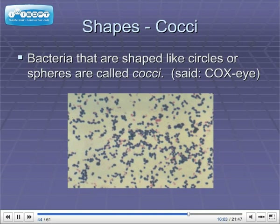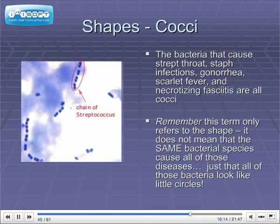Bacteria that are shaped like circles or spheres are called cocci. You can see a picture of them here — all the little purple circles are cocci. The bacteria that cause strep throat, staph infections, gonorrhea, scarlet fever, and necrotizing fasciitis are all cocci. Remember, this term refers to the shape; it doesn't mean the same bacterial species cause all these diseases, just that they all look like little circles.